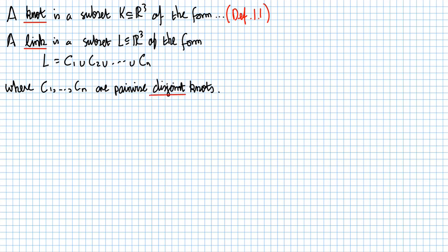So this pairwise disjoint condition means that if I take any two of these knots that make up the link, then their intersection is empty, they don't meet. And then these individual knots are called the components.